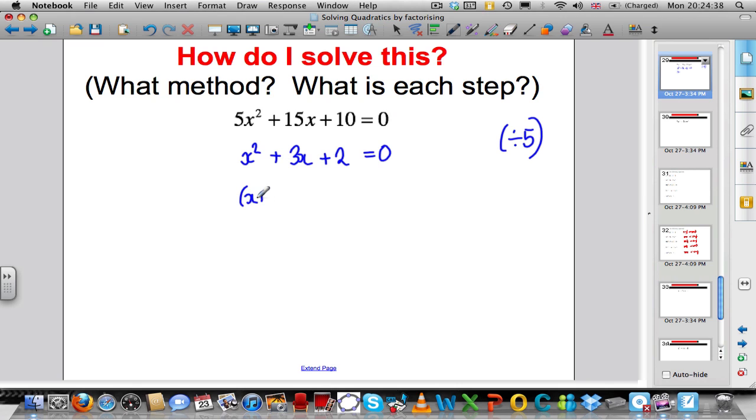It simply factorises to x plus 1, x plus 2, and that's equal to 0. So, the solutions are x is minus 1 or x is minus 2.